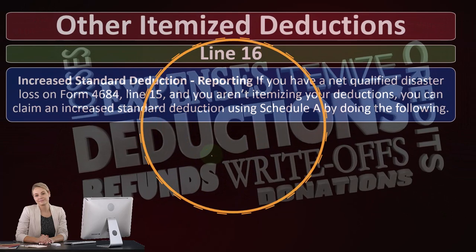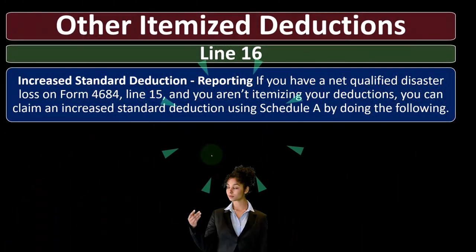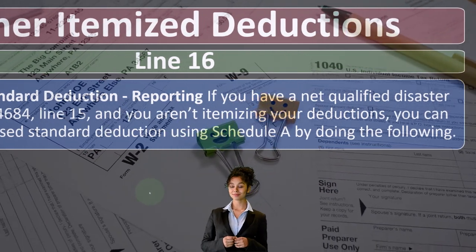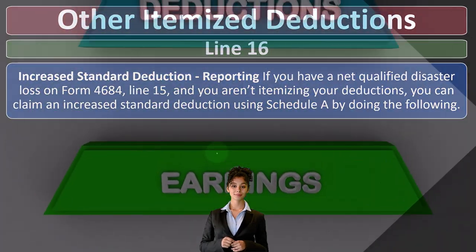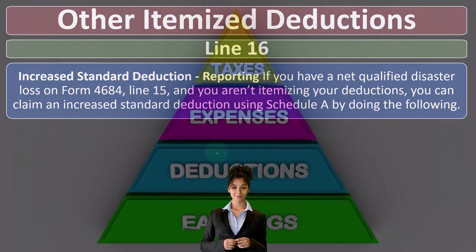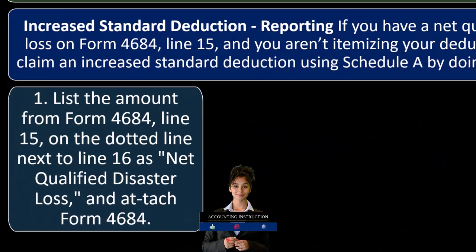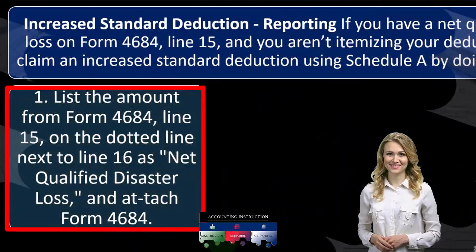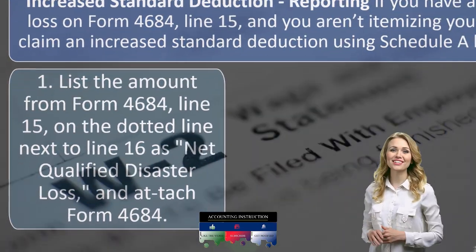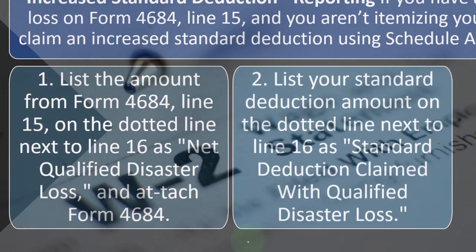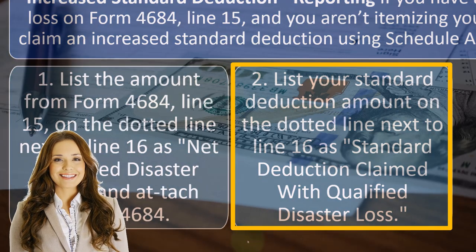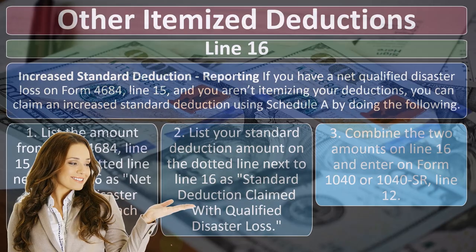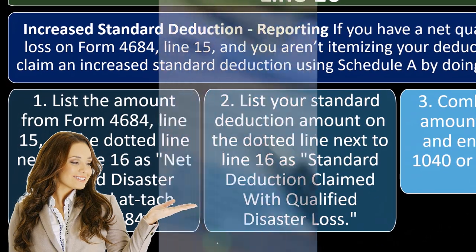Other itemized deductions, line 16: increased standard deduction reporting if you have a net qualified disaster loss — Form 4684, line 15 — and you aren't itemizing your deductions. You can claim an increased standard deduction using Schedule A by: number one, listing the amount from Form 4684, line 15 on the dotted line next to line 16 as 'net qualified disaster loss' and attach Form 4684; number two, listing your standard deduction amount on the dotted line next to line 16 as 'standard deduction claimed with qualified disaster loss'; and number three, combining the two amounts on line 16 and entering on Form 1040 or 1040-SR, line 12.